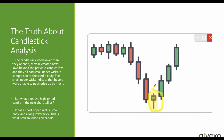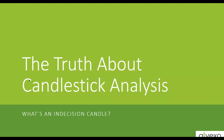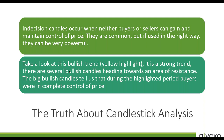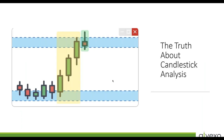This is not a pattern and not a memorization of anything — this is interpreting the scenario to explain what's happening with the buyers and the sellers. This is reading the story of price on a live chart. Indecision candles occur when either buyers or sellers cannot gain or maintain control of price. They are common and appear all the time, but if used the right way they can be very powerful. Just because they appear doesn't mean anything by itself — you have to be reading the story of price.